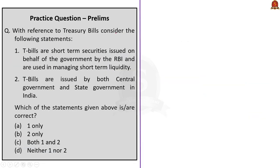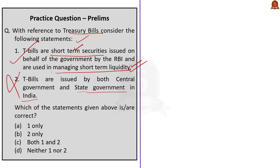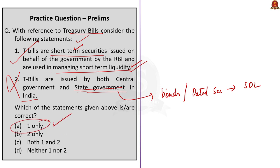Fourth question: With reference to Treasury bills, consider the following statements. Statement 1: Treasury bills are short-term securities issued on behalf of the government by the RBI and are used in managing short-term liquidity. Statement 2: Treasury bills are issued by both Central Government and State Governments in India. Which of the statements given above are correct? Option A: 1 only. Option B: 2 only. Option C: Both 1 and 2. Option D: Neither 1 nor 2. The first statement is correct — treasury bills are short-term securities issued by RBI on behalf of the government and used to manage short-term liquidity. The second statement is wrong — state governments can issue only bonds or dated securities, called State Development Loans. Only the central government can issue both treasury bills and bonds. Answer is Option A, 1 only.